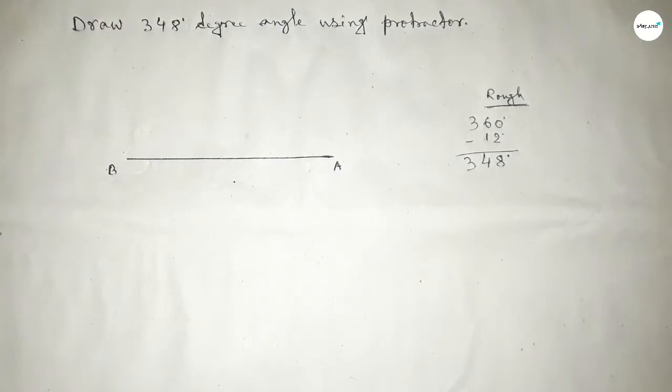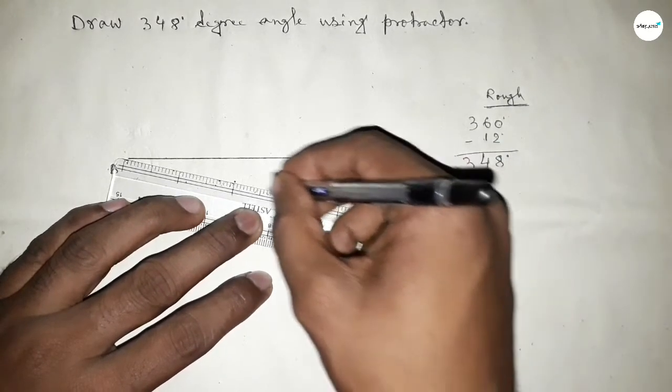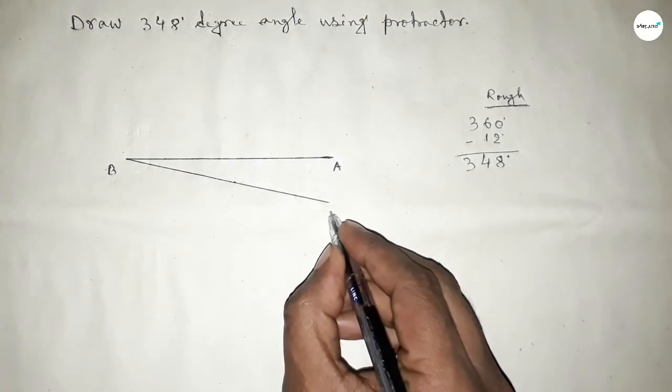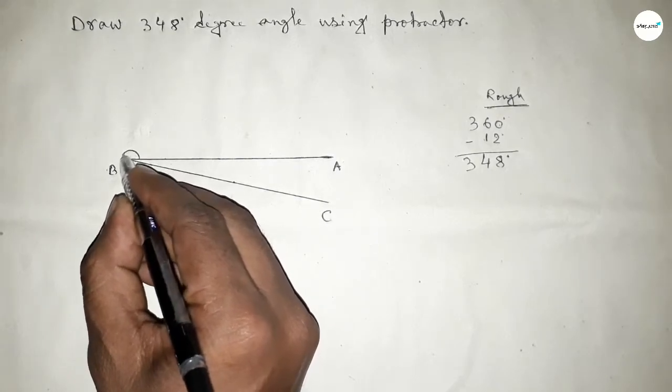Now joining this side to get the angle 348 degree angle. Now taking here point C, so angle ABC.